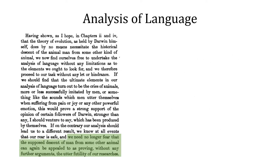Having shown in chapters 2 and 4 that the theory of evolution as held by Darwin does not necessitate the historical descent of animal man from some other kind of animal, we now find ourselves free to undertake the analysis of language without any limitation as to the elements we ought to look for. If we should find that the ultimate elements in our analysis of language turn out to be the cries of animals, or sounds men utter when suffering from pain or joy, this would prove strong support for certain followers of Darwin. If on the contrary our analysis should lead us to a different result, we know our rear is safe, and we no longer fear that the supposed descent of man from some other animal can be appealed to as proving the utter futility of our researches.